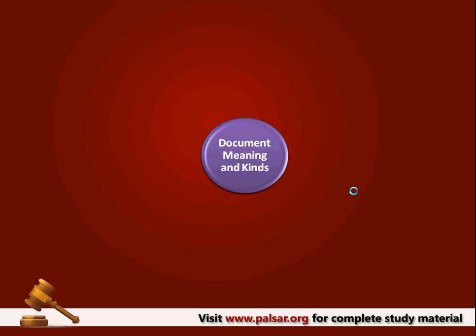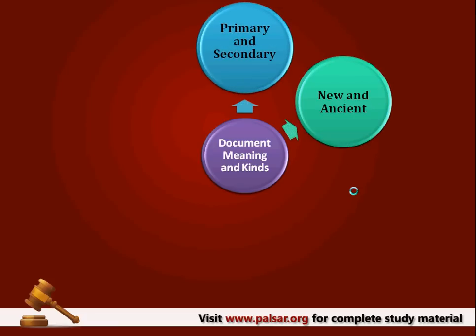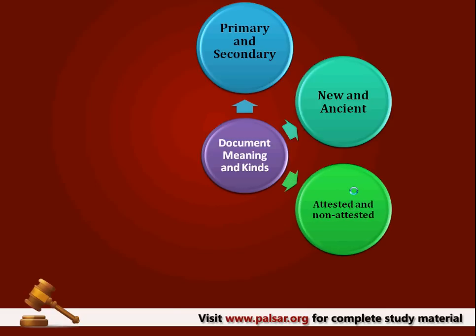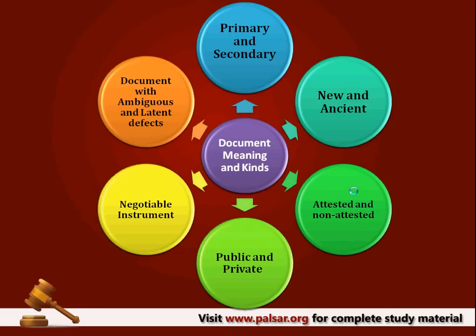Under Indian Evidence Act, we have a variety of documents. They can be classified into: primary and secondary, new and ancient, attested and non-attested, public and private, negotiable instrument and ordinary instrument, and documents with latent defects and patent defects. So under Indian Evidence Act there is a clear definition of what a document is and what are the various kinds of documents.